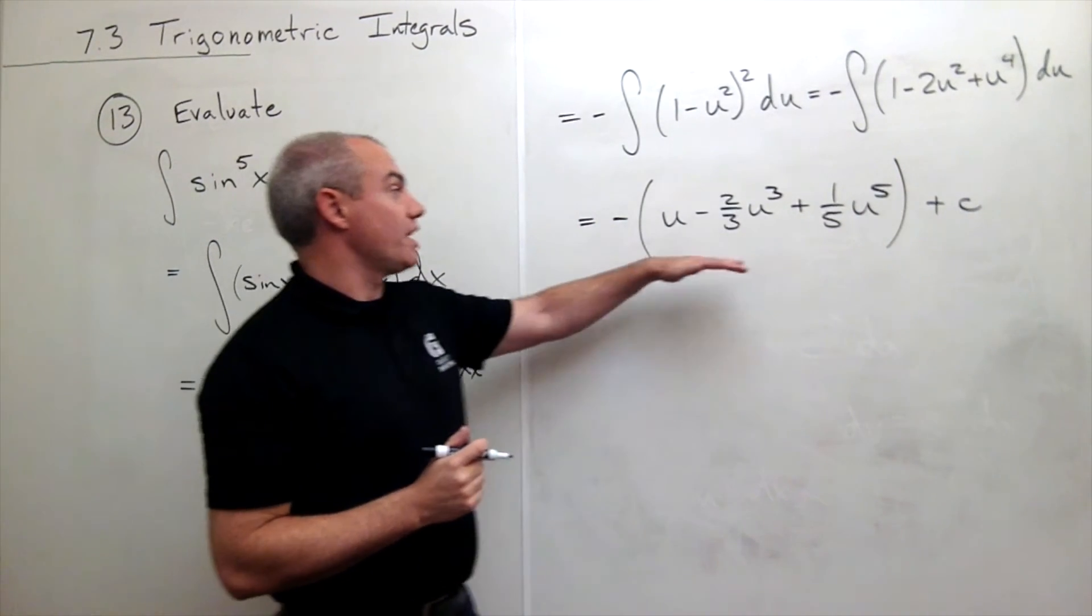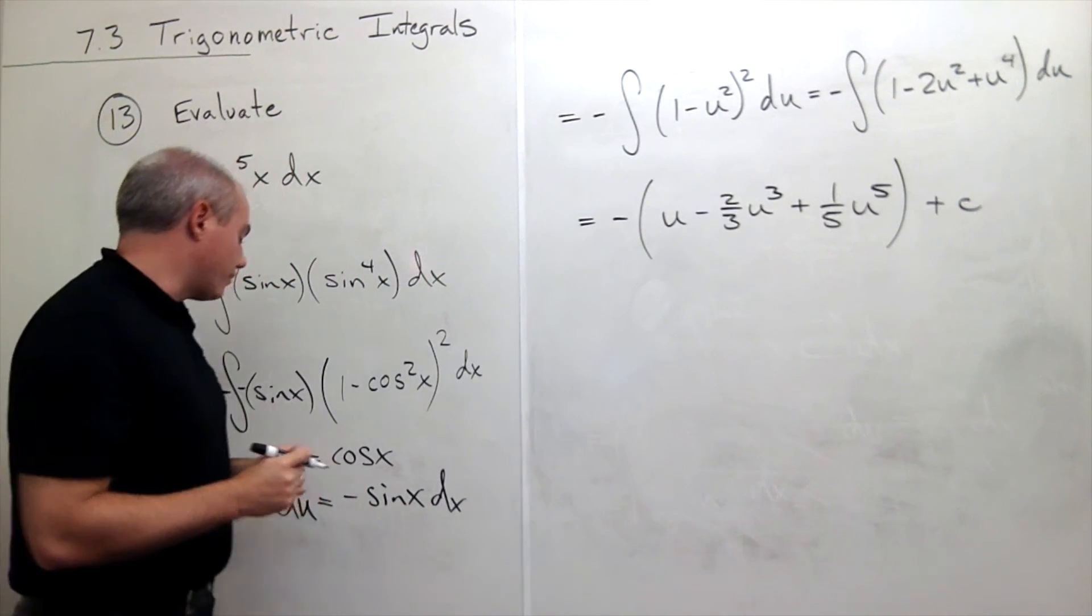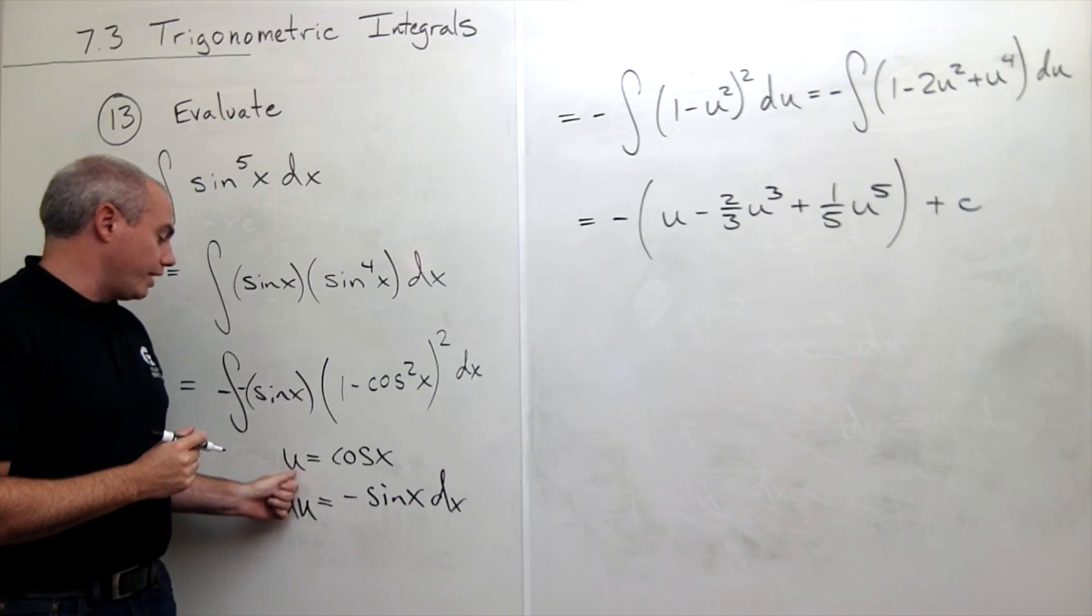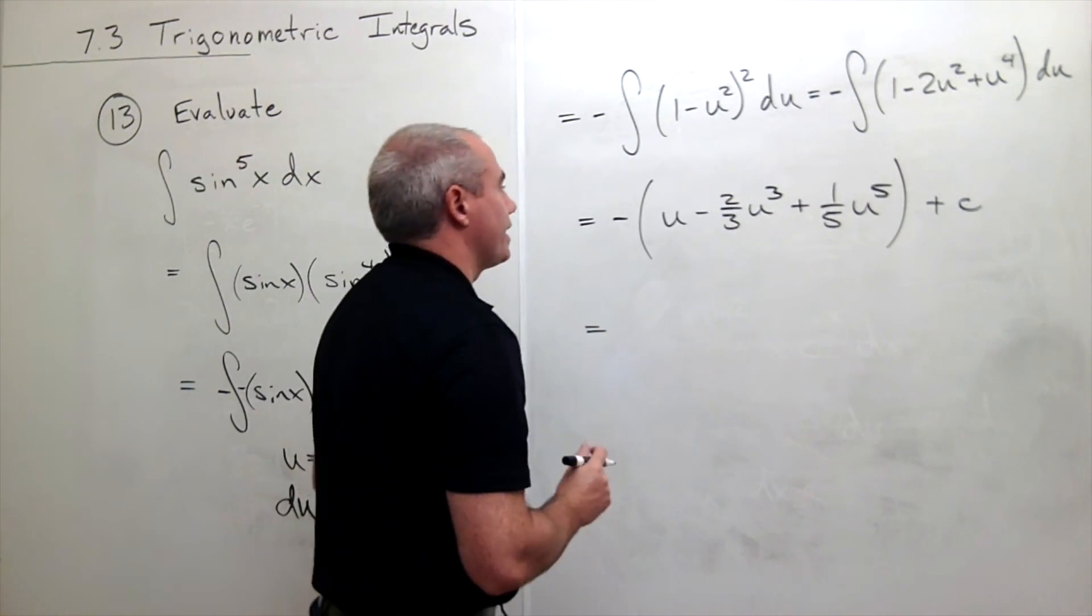All right, we're almost done. We've got an antiderivative, but it's in u, not in x's. So I need to remind myself what u is. U is cosine of x. So let's plug things back in. I'll just distribute this negative at the same time.